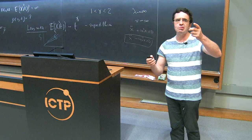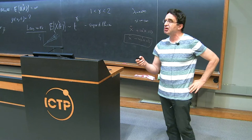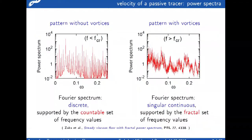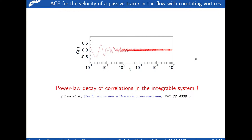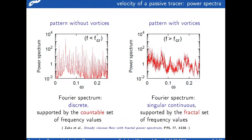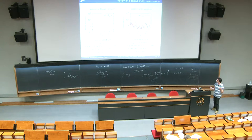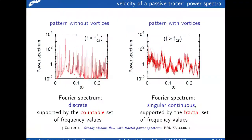Let the tracer be carried along this velocity field. If you look at the Fourier spectrum of the velocity carried by this flow, when there are no vortices, this is a quite usual discrete Fourier spectrum - a quasi-periodic process with a dense countable set of delta functions. But if you have vortices in your flow, you have a different picture. This complicated pattern is neither discrete nor absolutely continuous with respect to the Lebesgue measure. It is singular continuous, supported by a fractal set of frequency values.